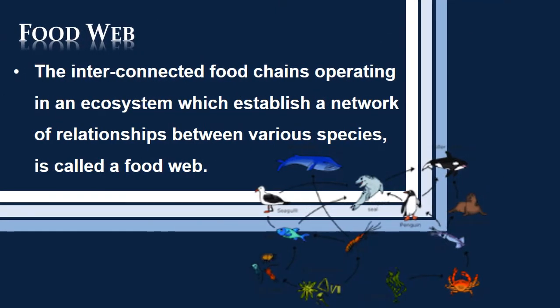Food Web: The interconnected food chains operating in an ecosystem which establish a network of relationships between various species is called a food web.